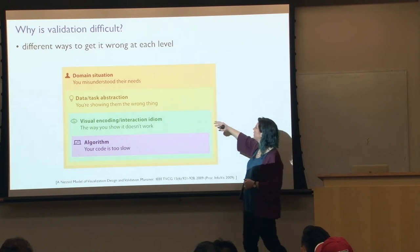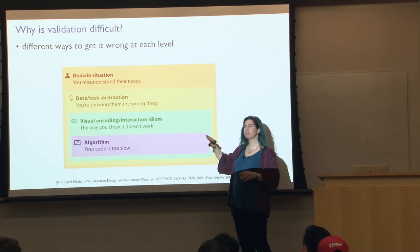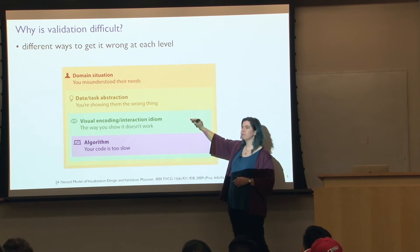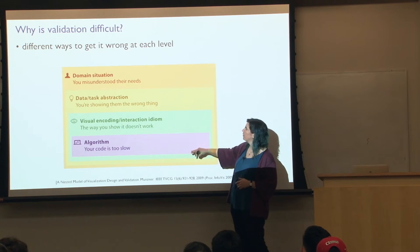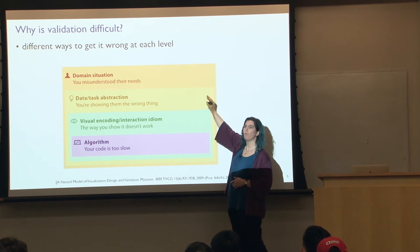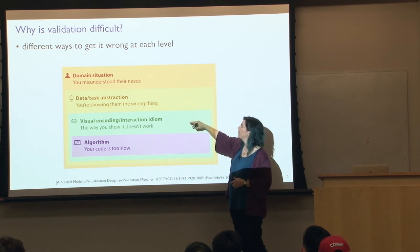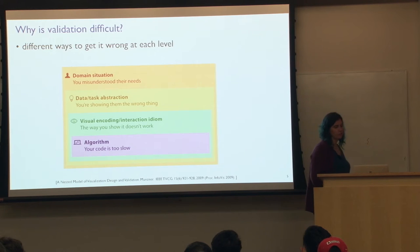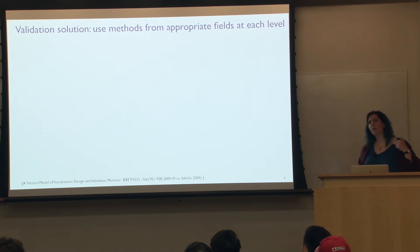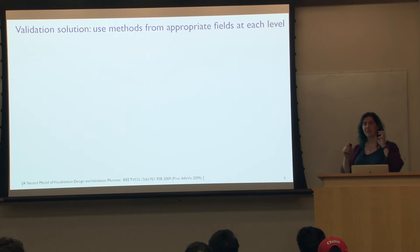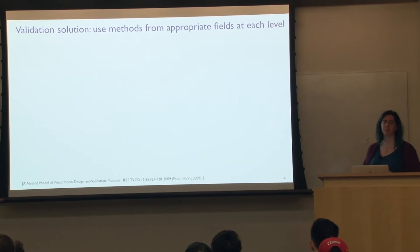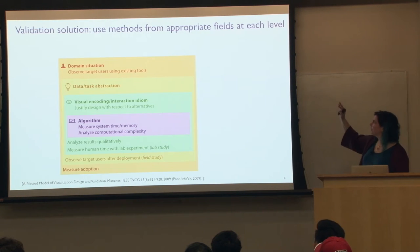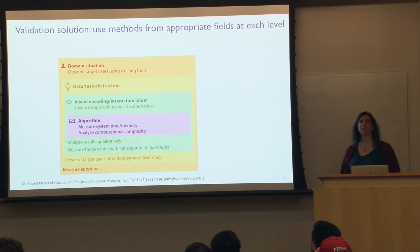A lot of people get stuck thinking that visualization is exactly and only the visual encoding and interaction design level. But it's really all of these things — there are deep algorithmic issues, and important questions about what the user is doing that shouldn't be skipped over. What's interesting and hard, but fun, about visualization is we need to plunder methods from many different fields to succeed. So let's think about some ways you could figure out if you got it right, starting from the inside and moving out.